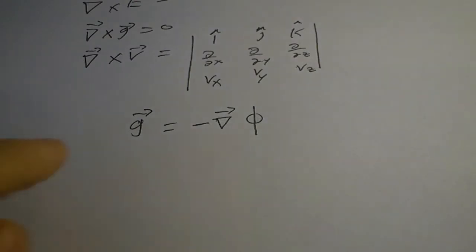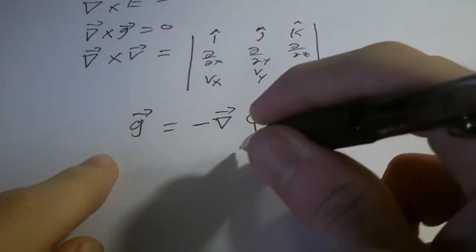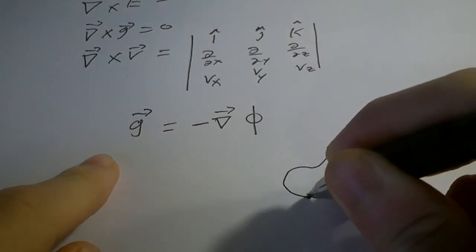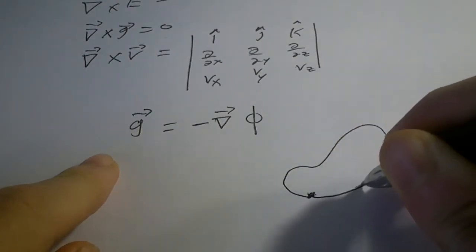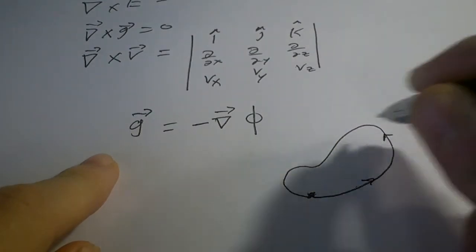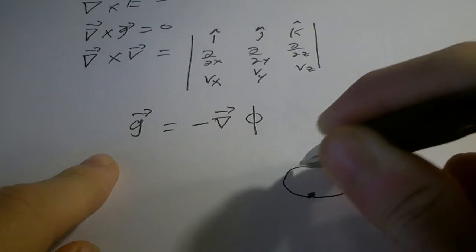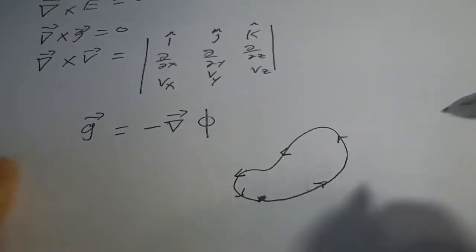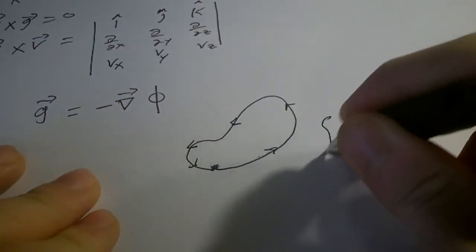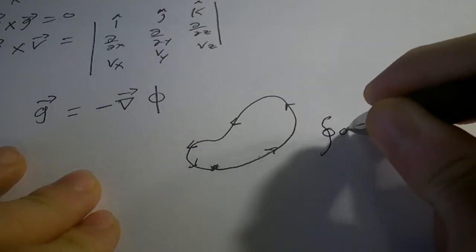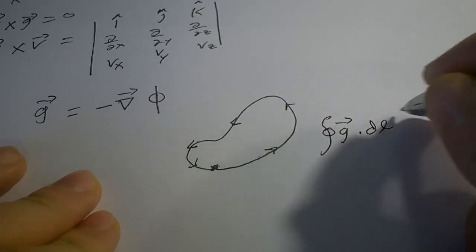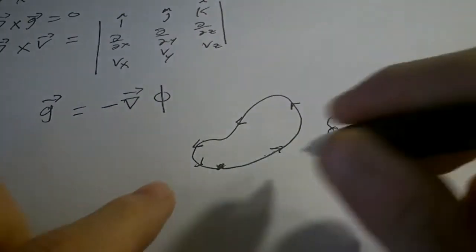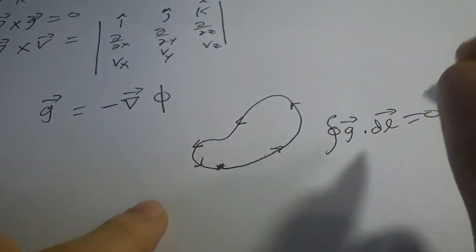Also, if we have something moving in some particular path where it starts where it ends, then the contour integral of g·dl equals zero. This means the field is conservative — it's path independent.